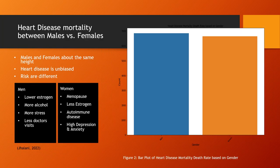Now, the mortality rates due to heart disease between genders. Look at this bar graph — blue representing males and orange representing females. What's noteworthy is the balance: the bars are almost the same height. Although the data seems well balanced, it doesn't mean that the risks are the same. Men, who have lower estrogen levels, drink more alcohol, have more stress, and visit doctors less, can have elevated heart disease risk. Women who have menopause, less estrogen, autoimmune disease, and high depression and anxiety can also be at risk.